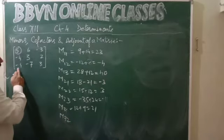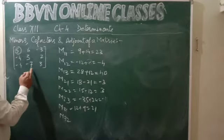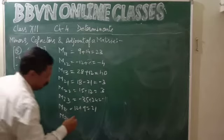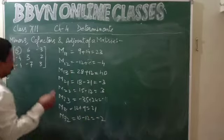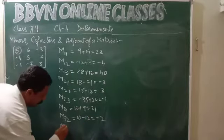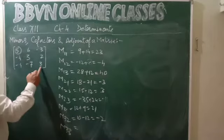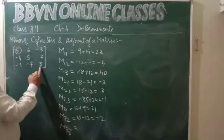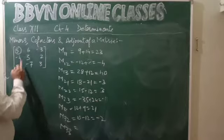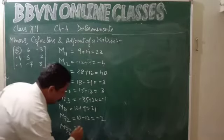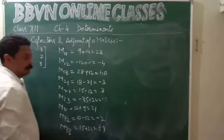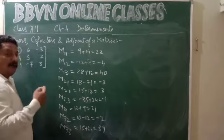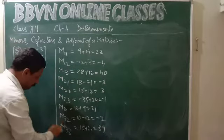Leave this row and this column: 10 minus 12. For M33, finding the minor of element 3 — leave this column and this row: 15 plus 24 equals 39. So these are the minors; this column represents the minus values.